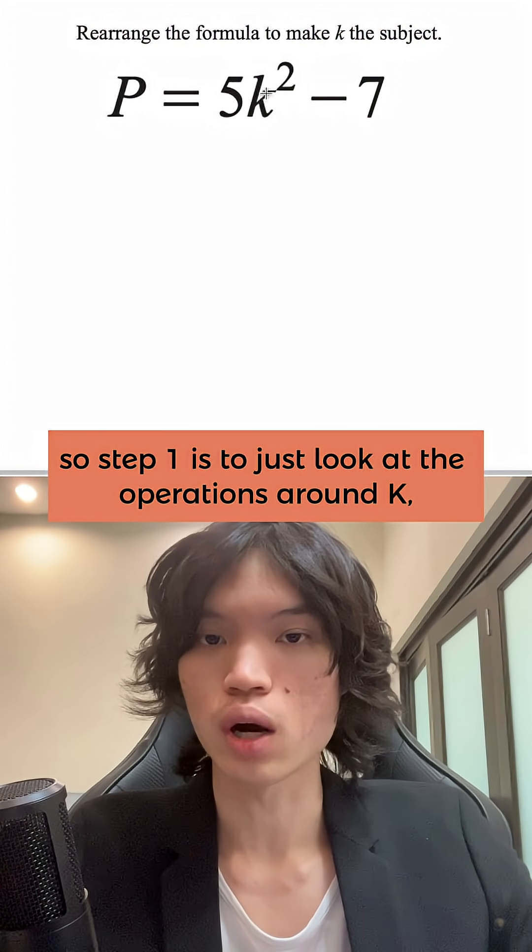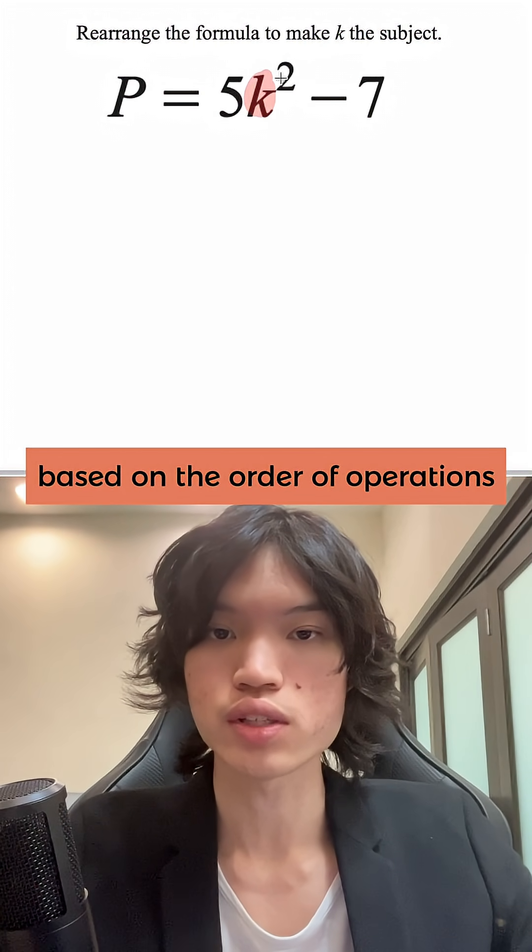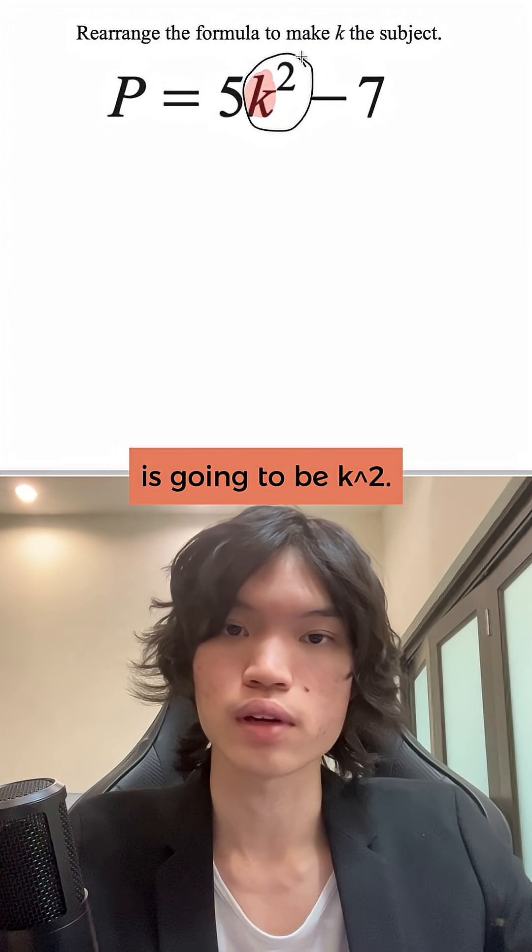Step one is to just look at the operations around k. I'm going to highlight that in red here. The closest thing to it, based on the order of operations, is going to be k squared, so k to the power of 2.